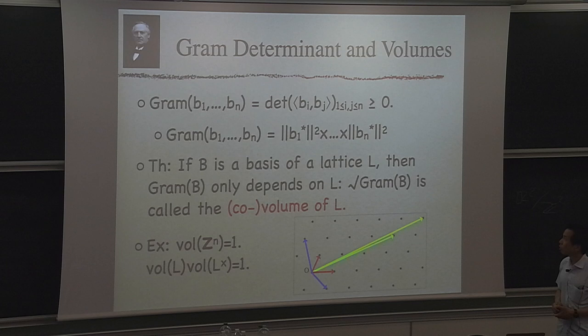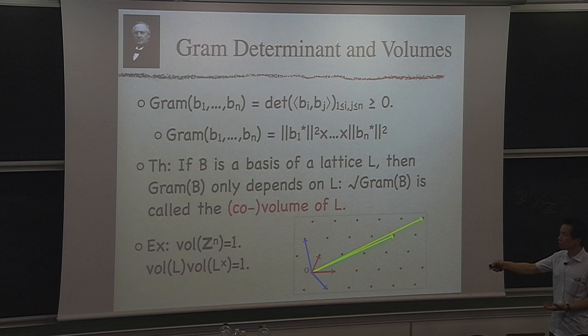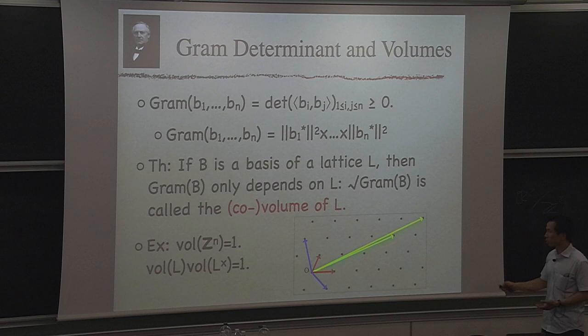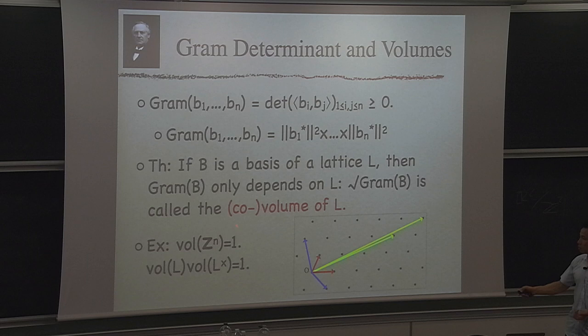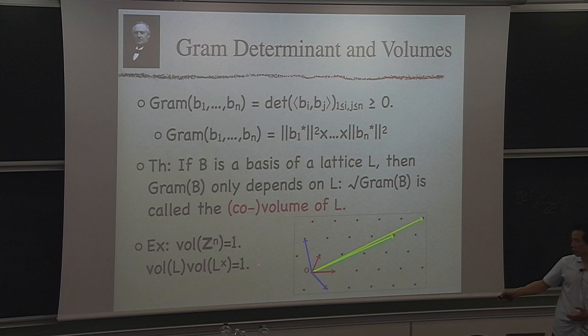There's a connection with duality: the last Gram-Schmidt vector, when normalized, is a dual lattice vector. The Gram determinant is the determinant of the matrix of inner products, which equals the product of the squared Gram-Schmidt norms. It's an elementary fact that the Gram determinant does not depend on the choice of basis, only on the lattice itself. The square root of this Gram determinant is called the covolume of the lattice. The covolume of Z^n is 1, and the product of the covolumes of the primal and dual lattice equals 1.